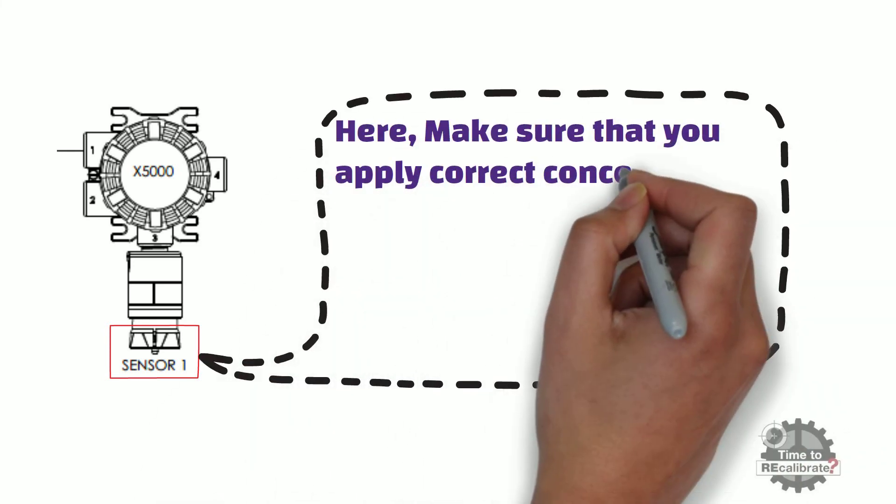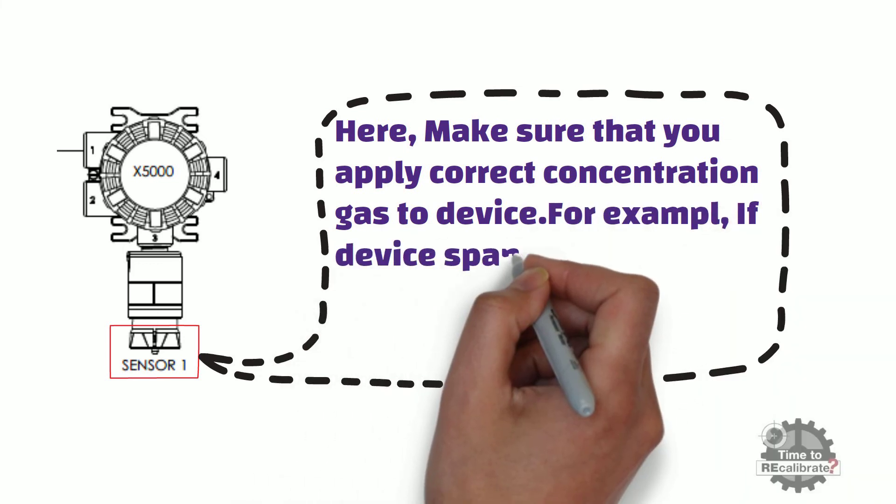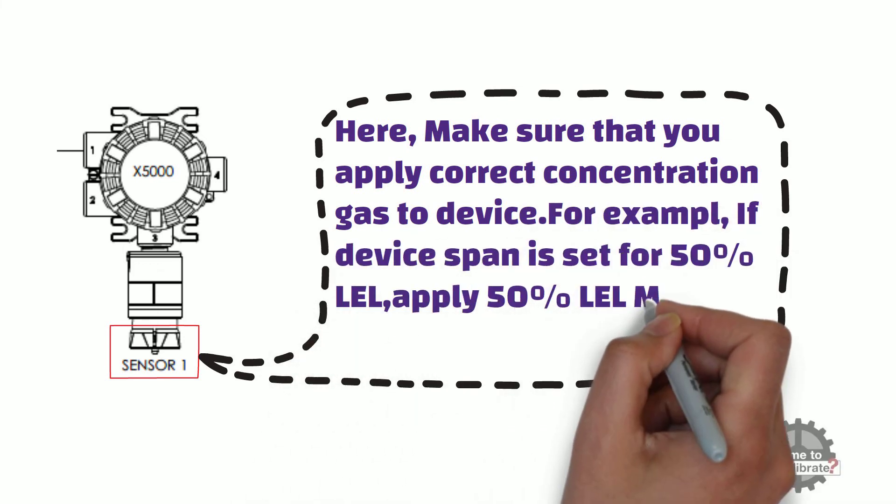For example, if device span is set for 50% lower explosion limit, apply 50% lower explosion limit methane gas to the sensor.